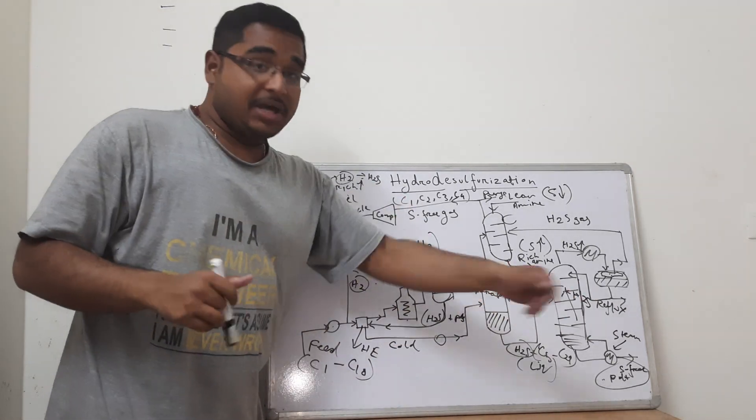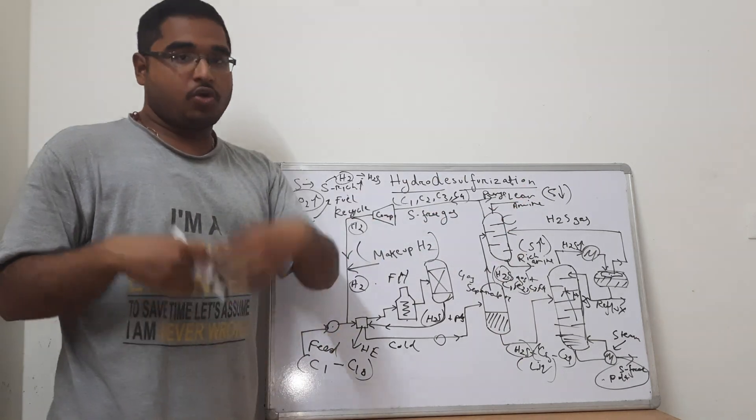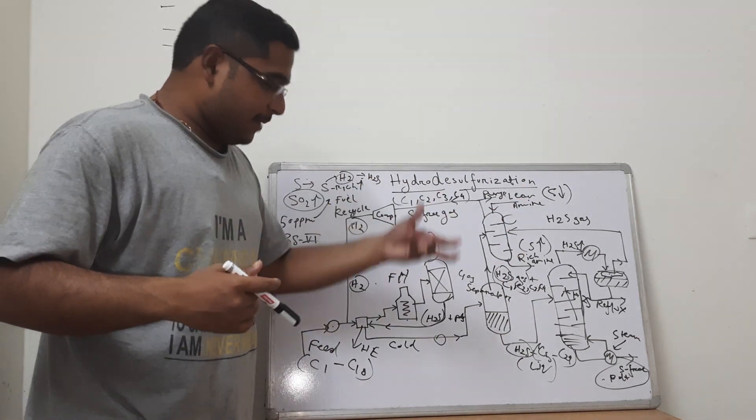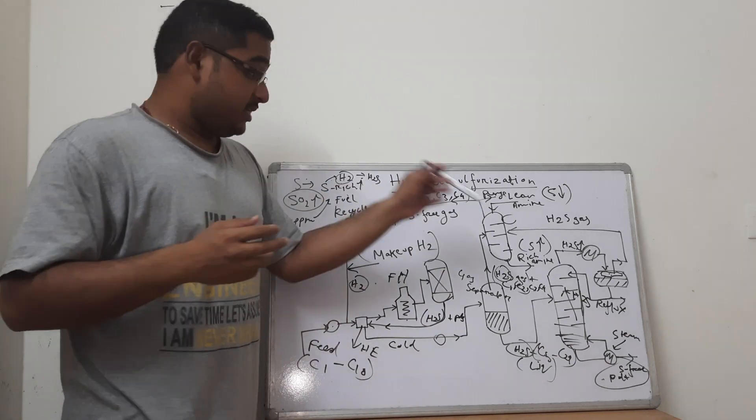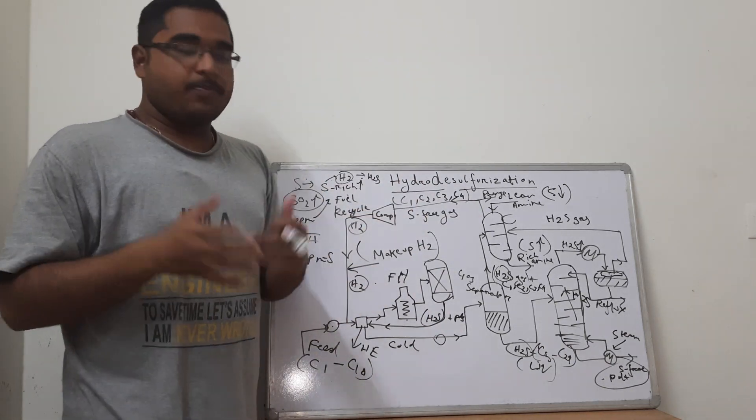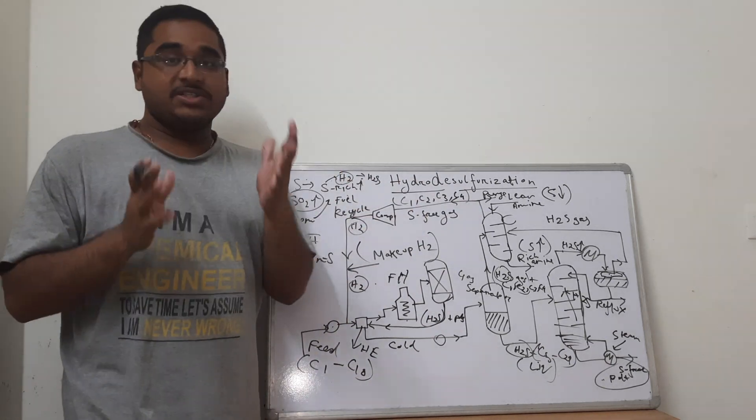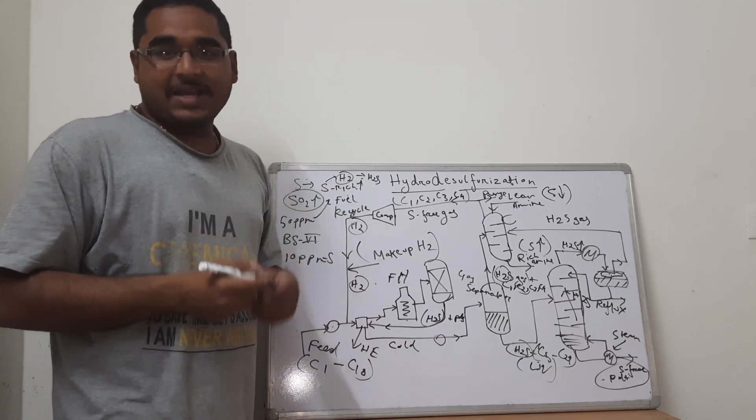Along with makeup hydrogen. Along with that the sulfur free product is obtained from the bottoms of the distillation column that we are using in steps to separate out whatever amount of H2S is being present in the streams. That is the entire process of hydro desulphurization that is a very popular practice in the refineries.